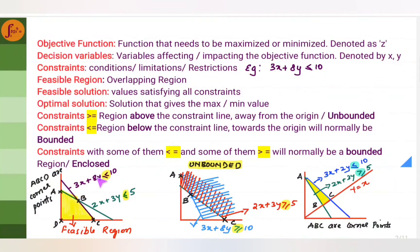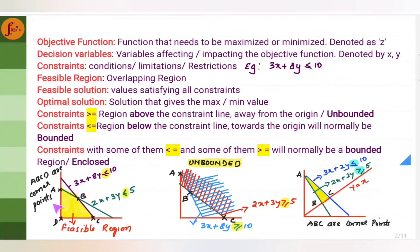If the constraints are less than or equal to, the shading is inwards towards the origin, and this is how the feasible region will look. Remember to include the origin as one of the points when the feasible region has all constraints as less than or equal to. You can also have mixed constraints — one less than and one greater than. In such cases, it becomes bounded: the feasible region is enclosed somewhere in the middle, not including the origin nor completely away from it.